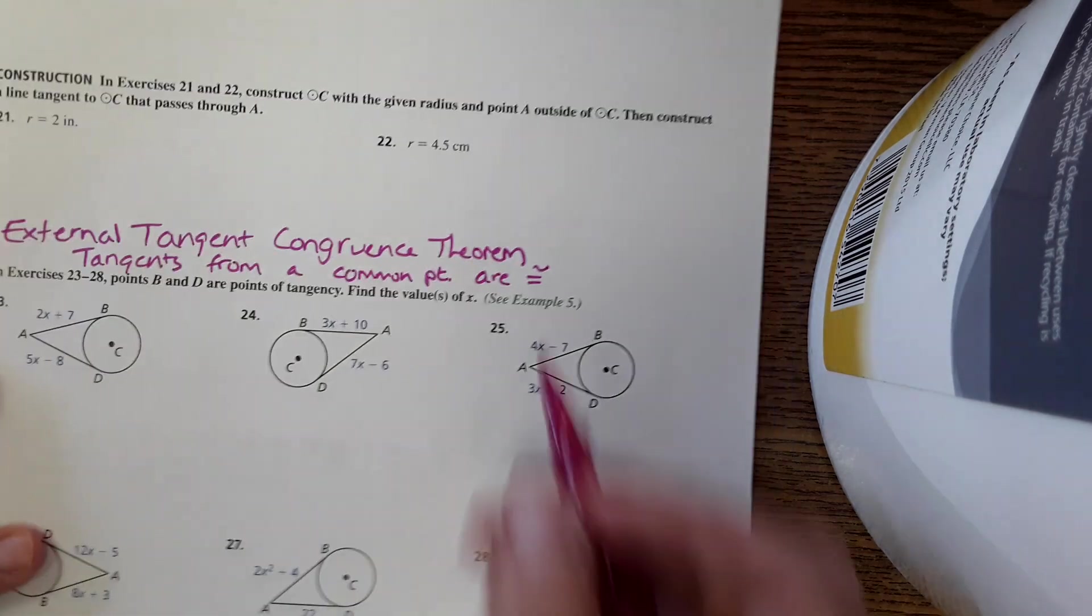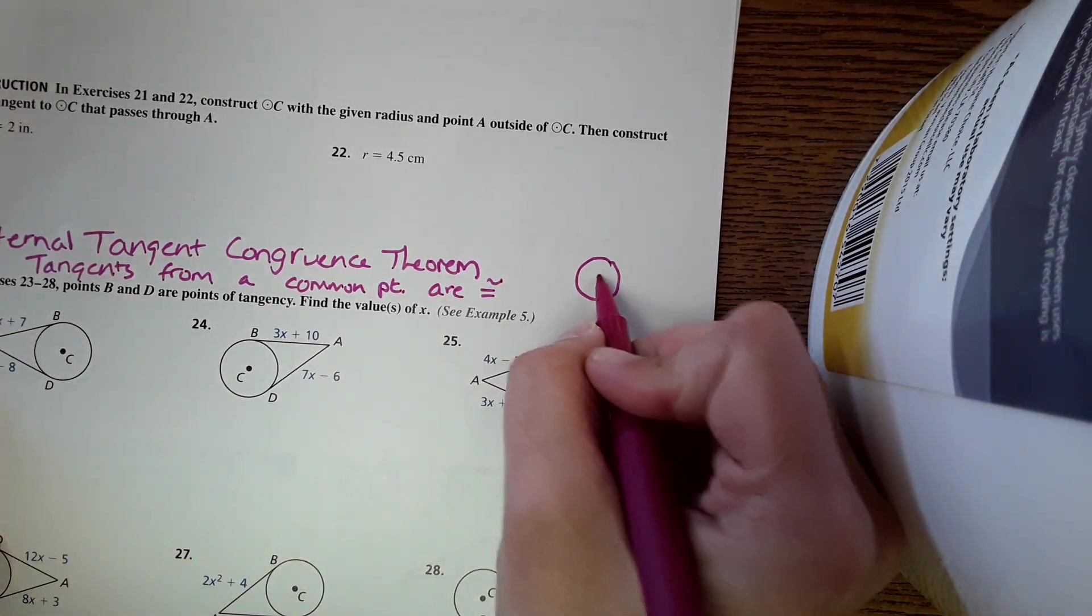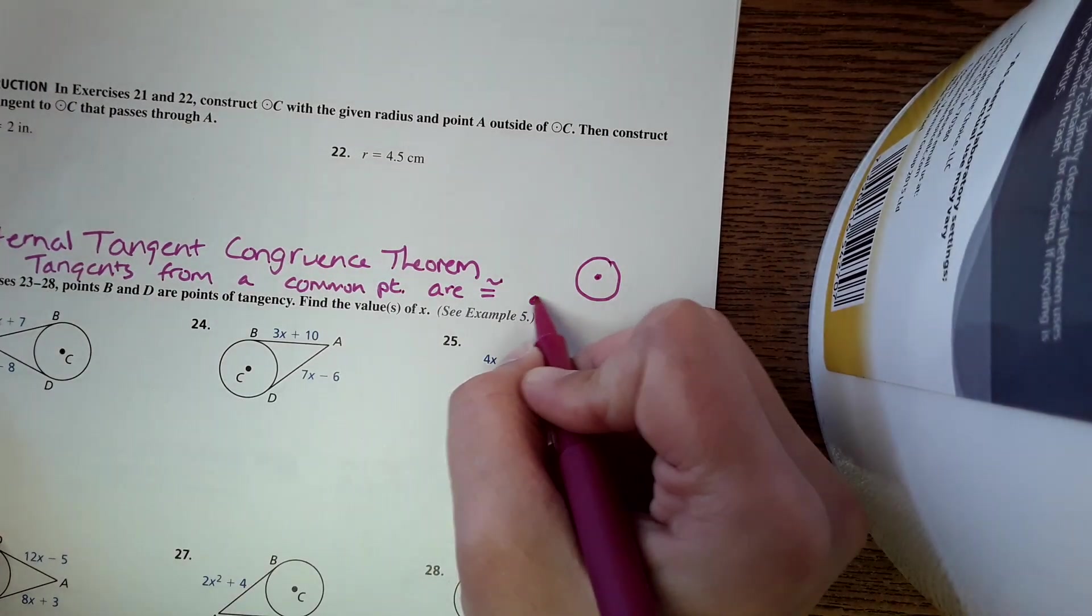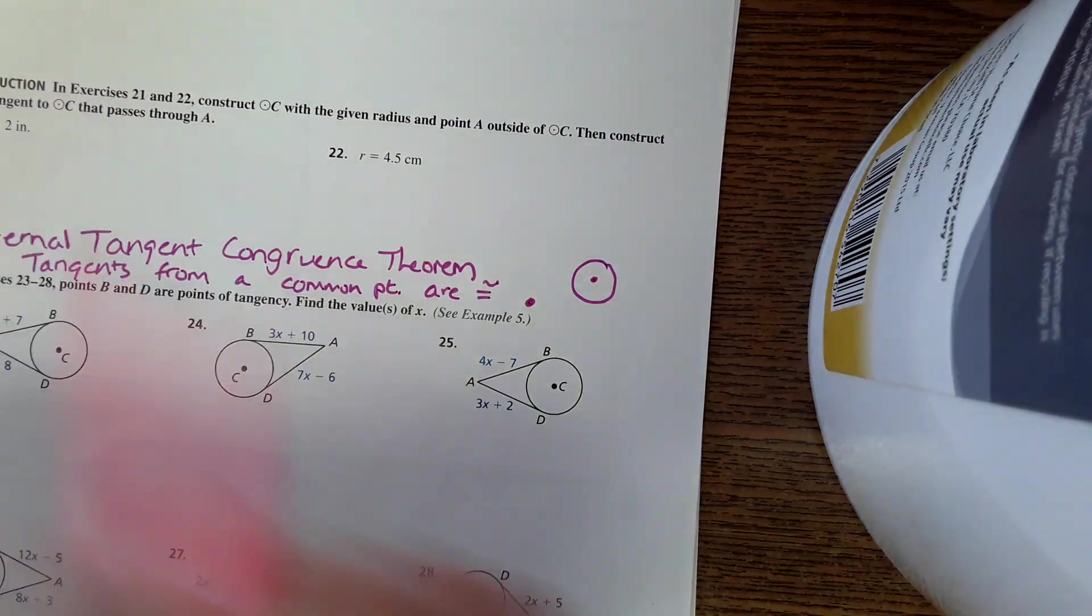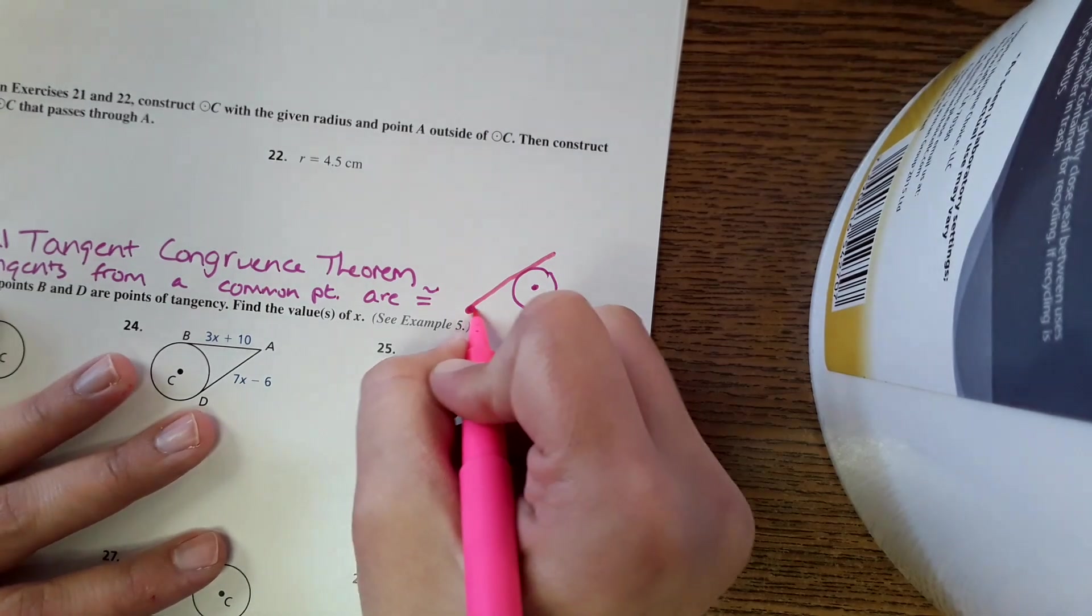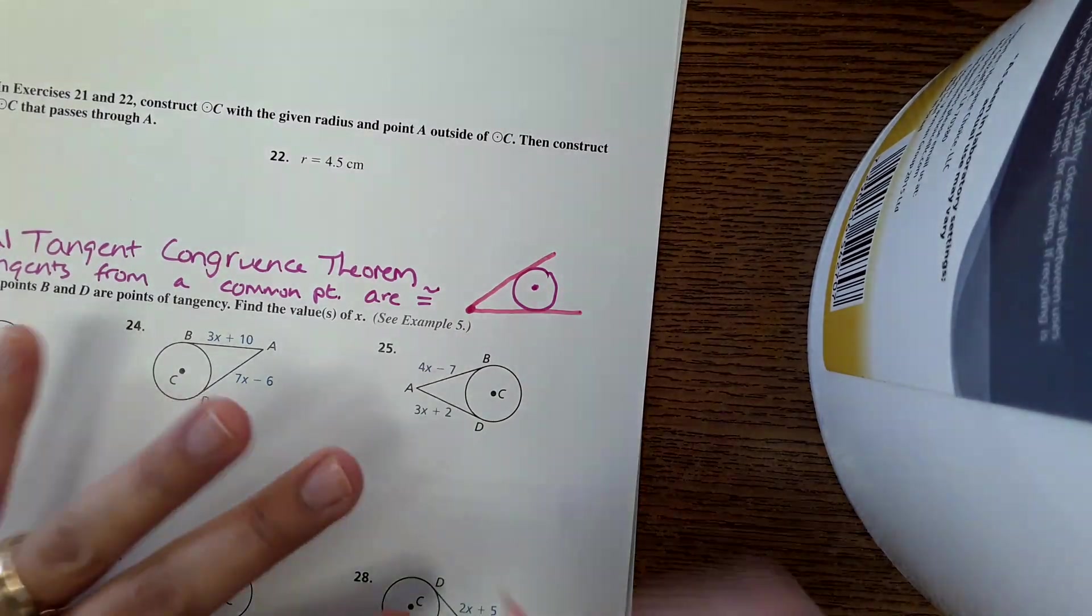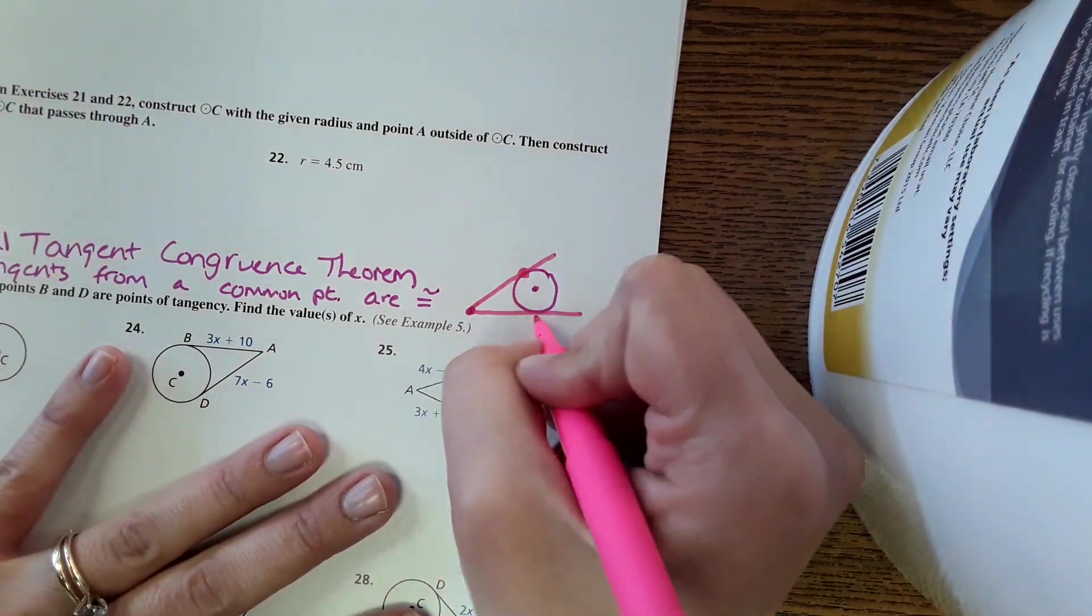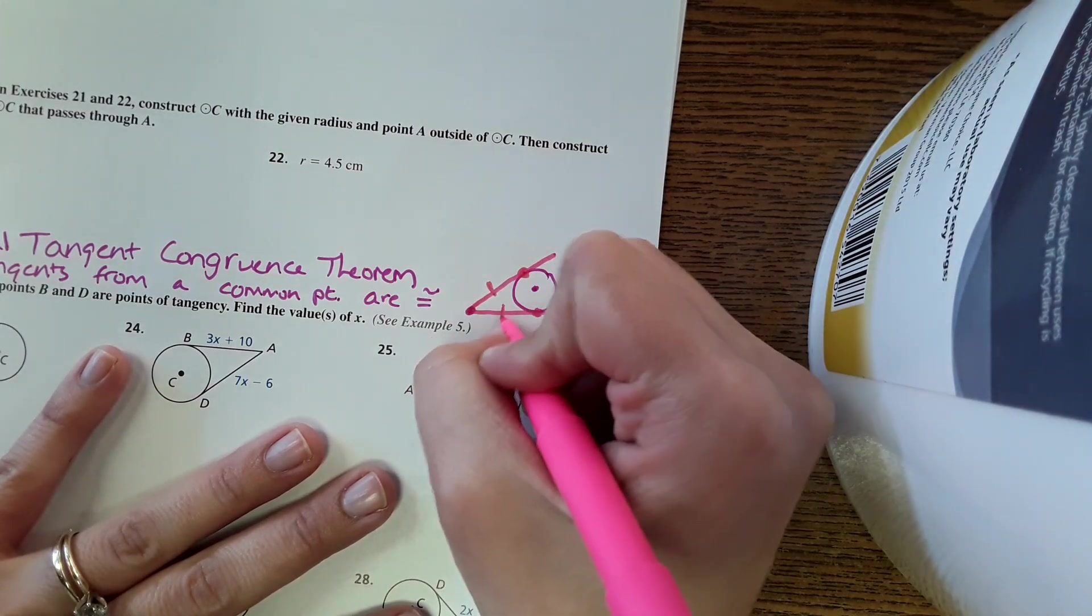And so what that means is if you have a circle and a point out here, and then you have a tangent from that point on this side of the circle and a tangent from that point on this side, then this segment is equal to this segment.